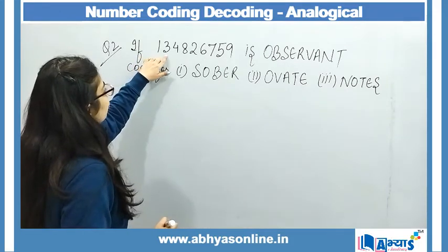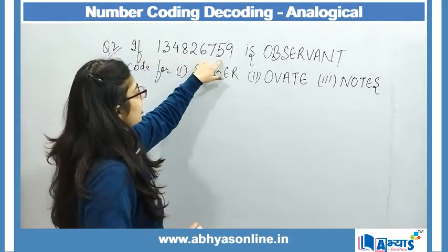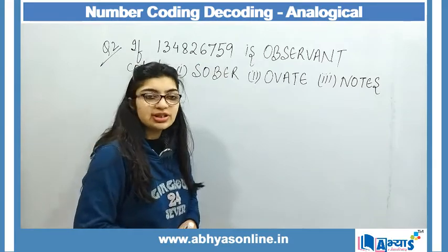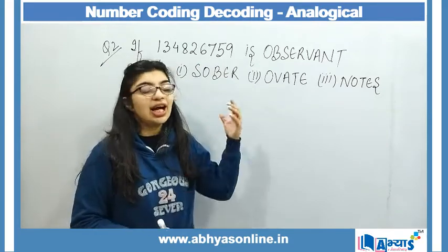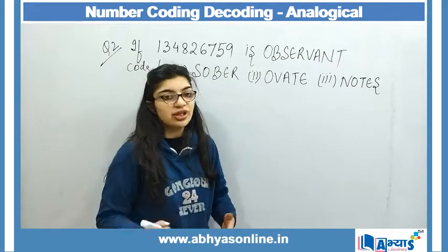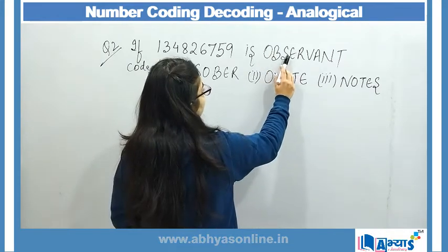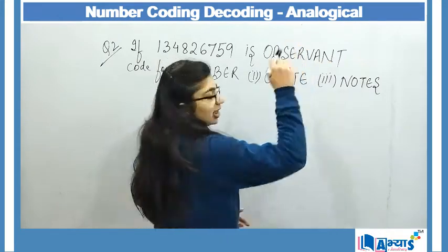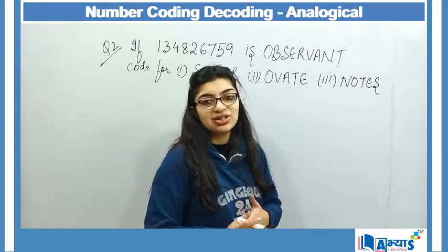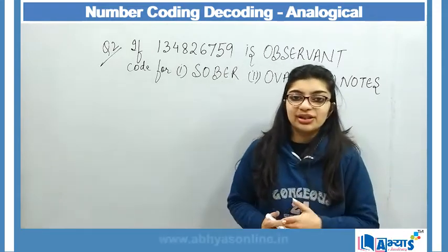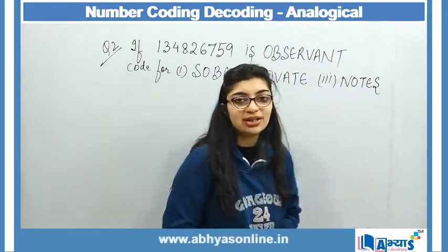I can see that there are 9 numbers: 1, 2, 3, 4, 5, 6, 7, 8, 9. अब देखना है कि क्या यहाँ पर 9 letters भी हैं — let us check: 1, 2, 3, 4, 5, 6, 7, 8, 9. Yes! So for each number there is a particular letter which is corresponding to that number.